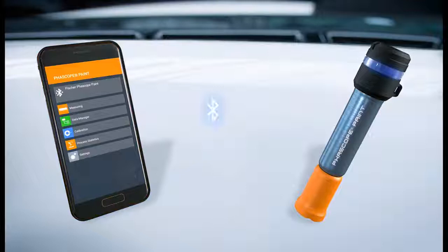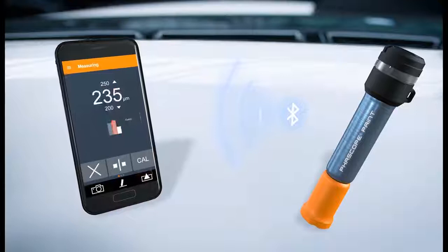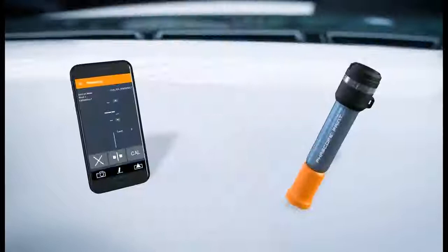It connects with your smartphone via Bluetooth and transfers the measured values to the Fischer app. You can run your statistical analyses of the measurement results in an app. It's also possible to generate inspection reports and directly send them.